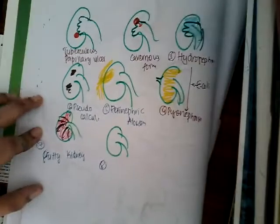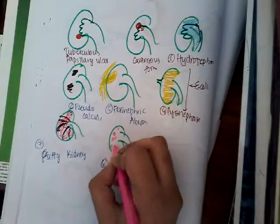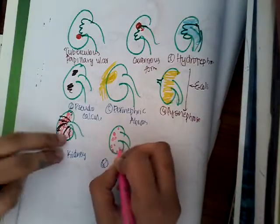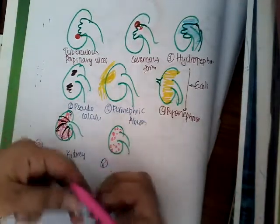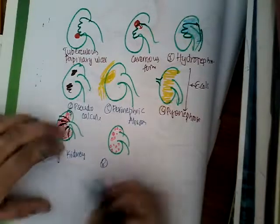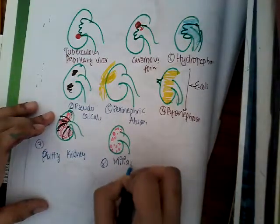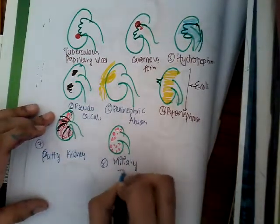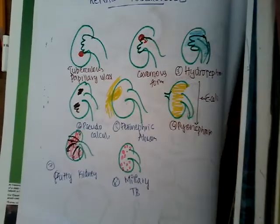The eighth type is miliary tuberculosis. Just like we have miliary pulmonary tuberculosis, we also have miliary tuberculosis of the kidney, which is the eighth type. These are the different types of renal tuberculosis.